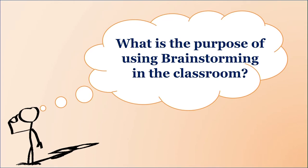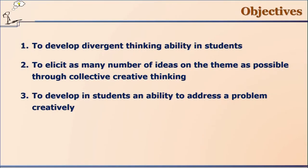Why should we use brainstorming in the classroom? What are the objectives? Basically, we use brainstorming — a collaborative and cooperative strategy — to develop divergent thinking ability in students. Because a problem can have many solutions, there is not necessarily just one solution. This requires not convergent thinking but divergent thinking — we have to think differently and in different directions. This strategy develops that kind of divergent thinking in students.